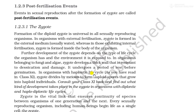In organisms with a haplontic life cycle, as you have read in Class 11, the zygote divides by meiosis to form haploid spores, which grow into haploid individuals. Consult your Class 12 book to find out what kind of development takes place in the zygote in organisms with diplontic and haplodiplontic life cycles. The zygote is a vital link that ensures continuity of species from one generation to the next.